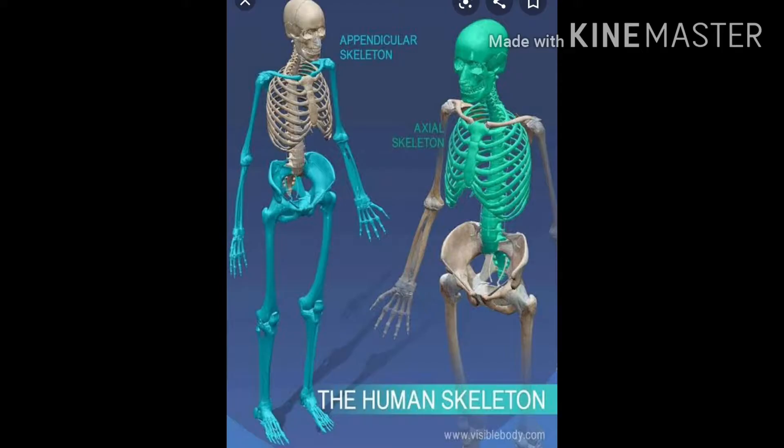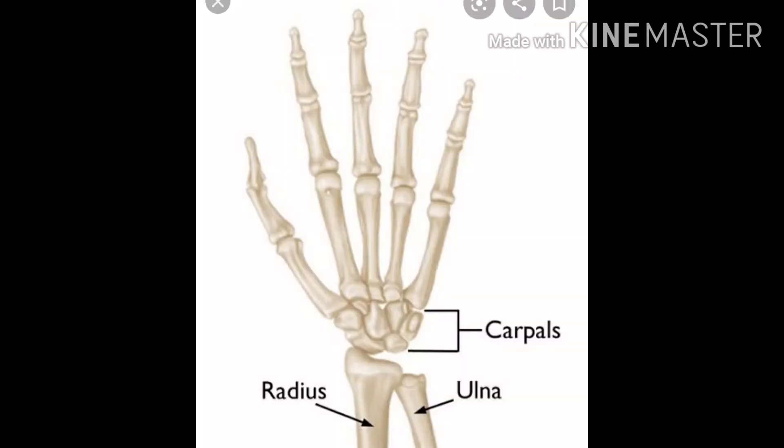Good morning students, today we will start with a new chapter: joints in our body and our nervous system. We start with the introduction — what is skeleton? Skeleton is made up of bones. These bones are very hard and rigid and also give shape to our body. Then, what are joints? Joints is the place where two or more bones meet.